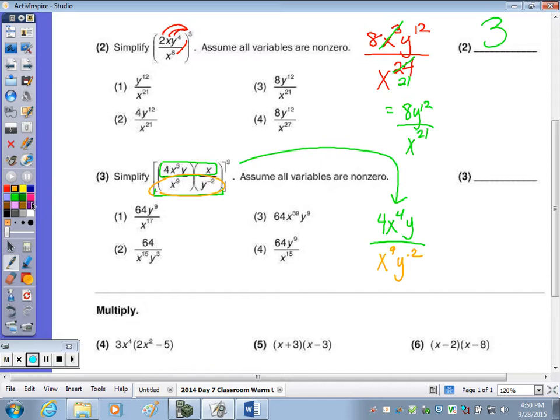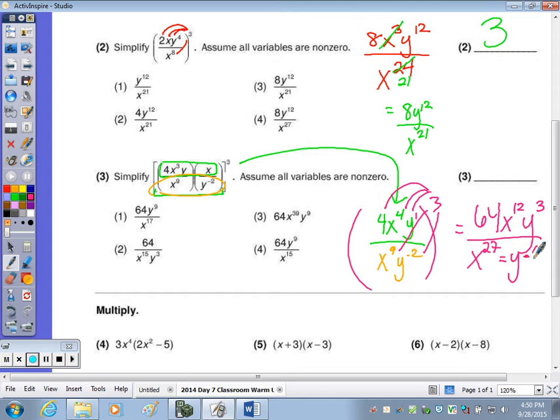Now I'm going to cube, so four cubed is equal to sixty-four, x to the fourth cubed is x to the twelfth, four times three is twelve, y to the first cubed, three times one is three. X to the ninth, nine times three, twenty-seven, negative two times three is y to the negative six. Keep the base,